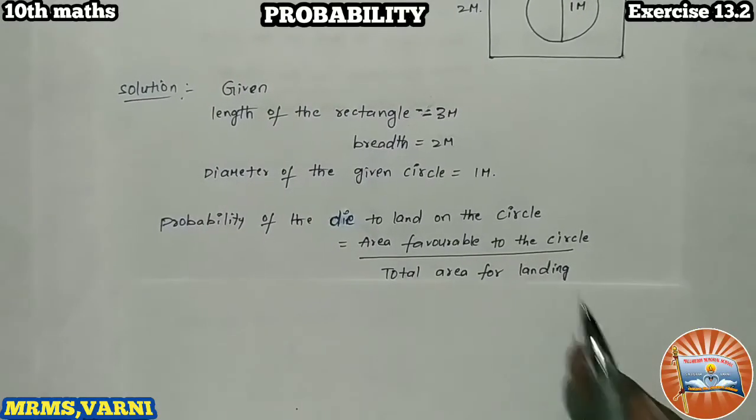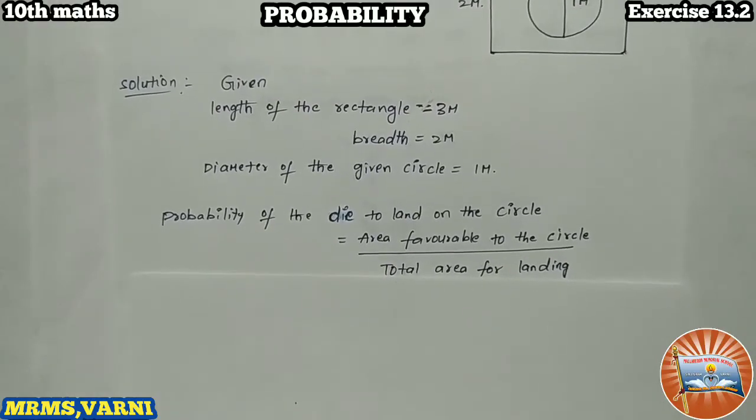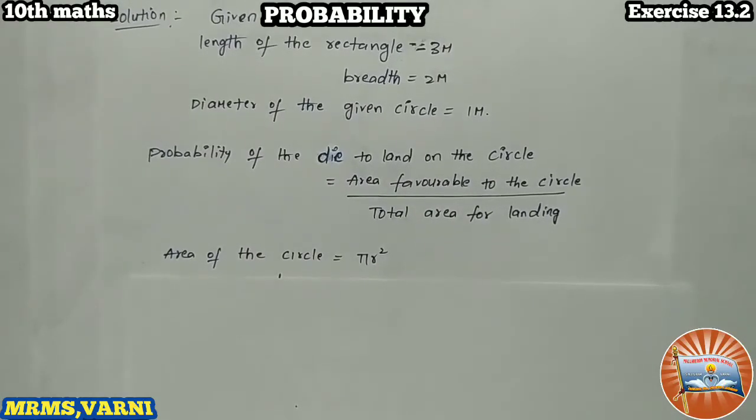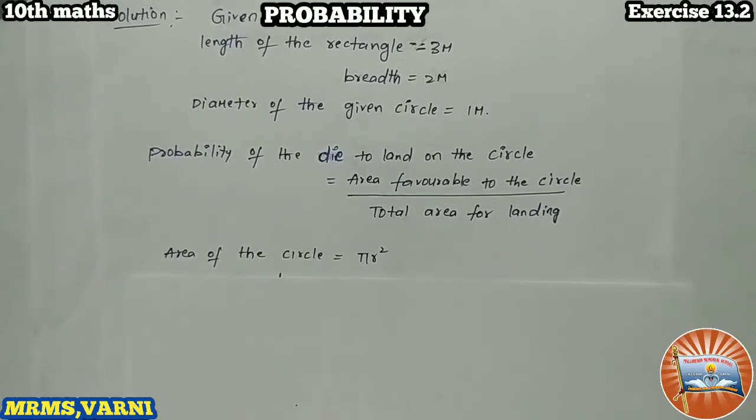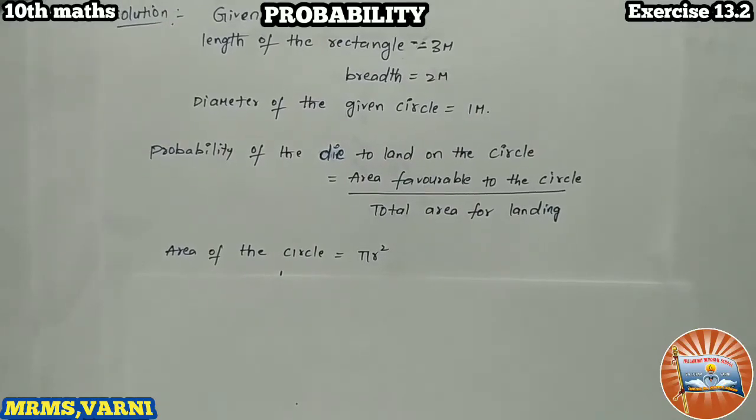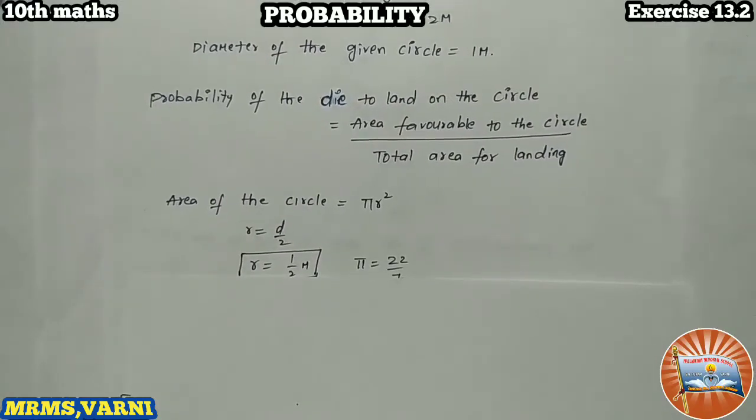First we find the circle area. What is the circle formula? Area of circle is equal to pi r squared. We don't have r value, we have diameter value. Radius is nothing but half of the diameter. So r equals d by 2, d given 1, so r equals 1 by 2 meter.